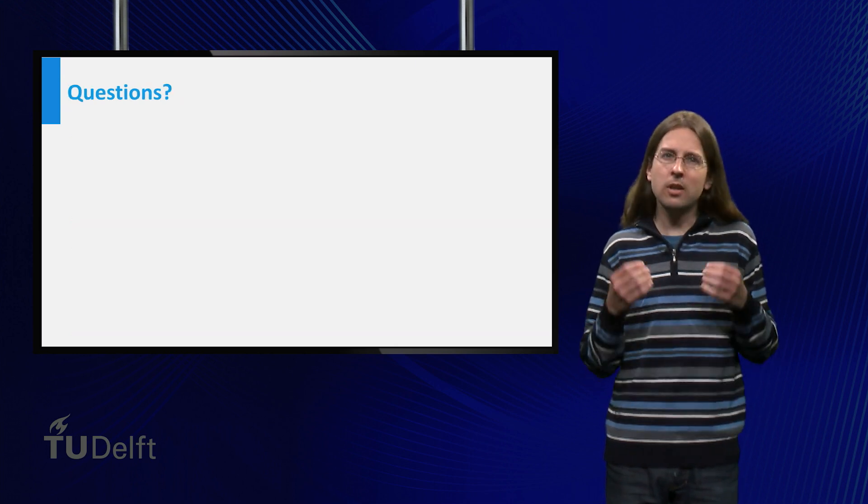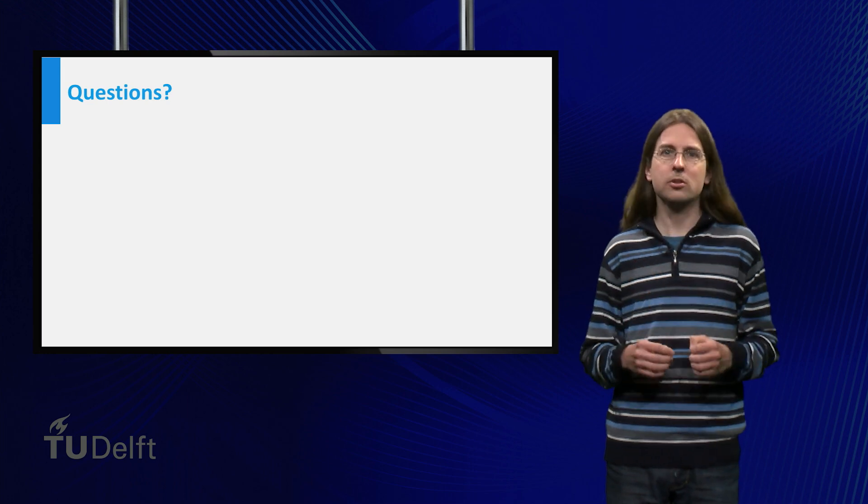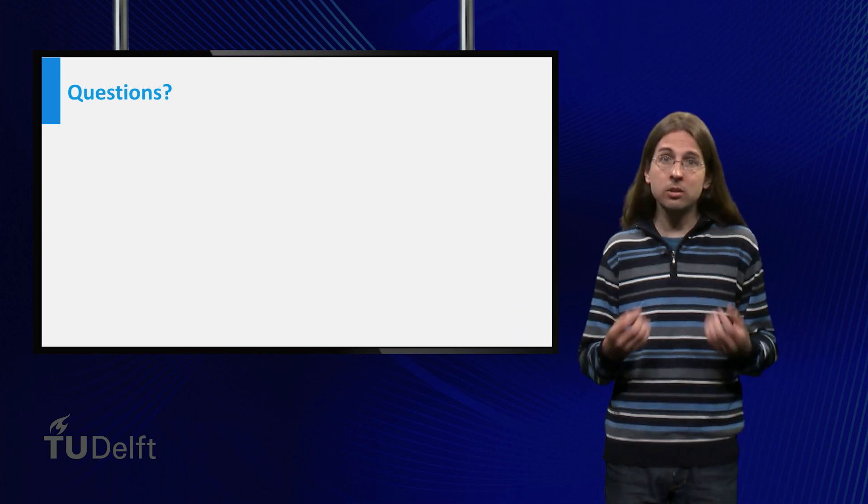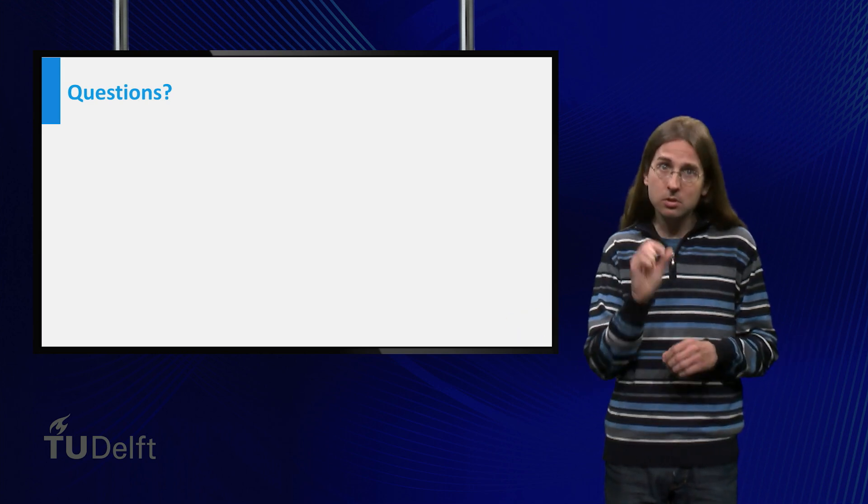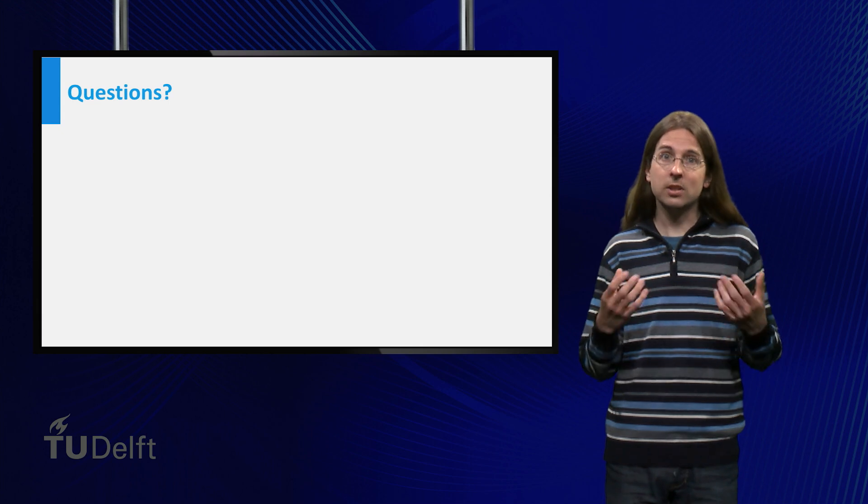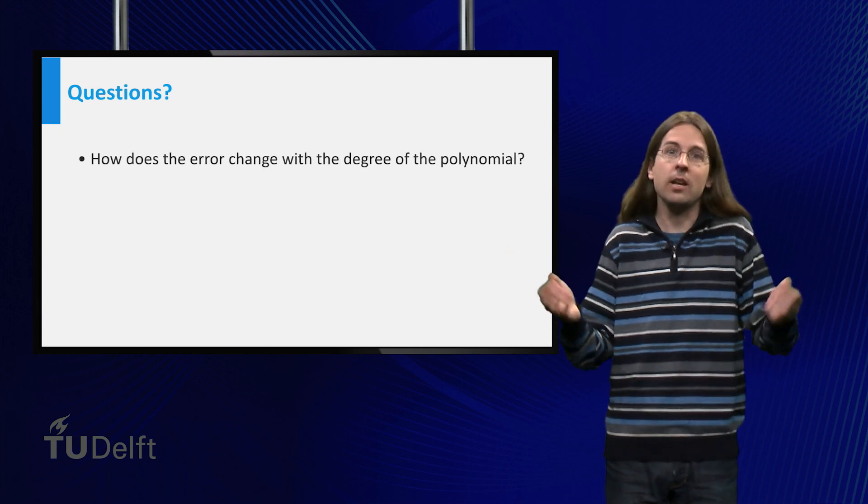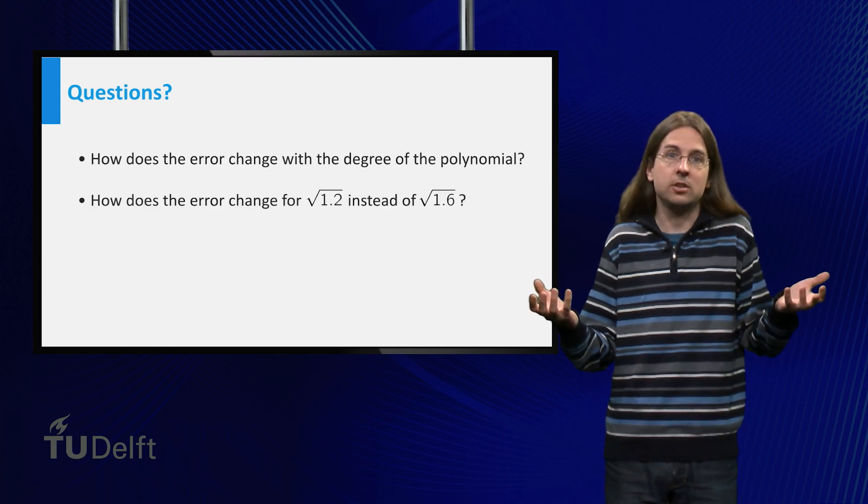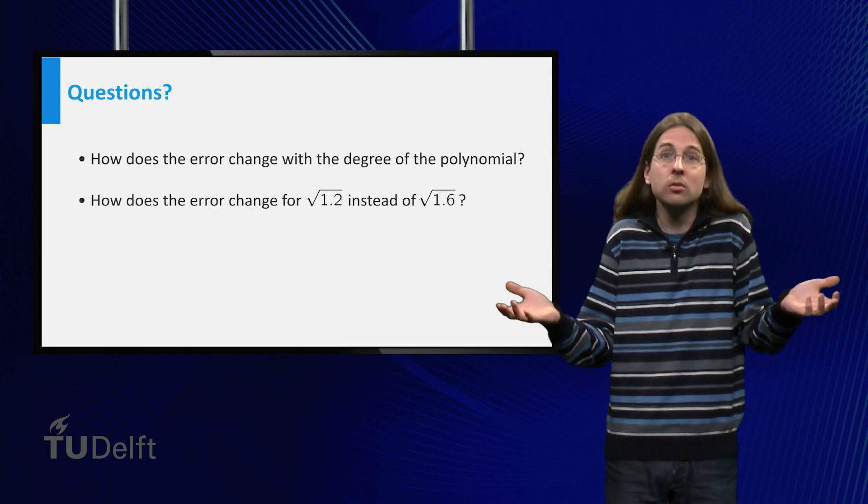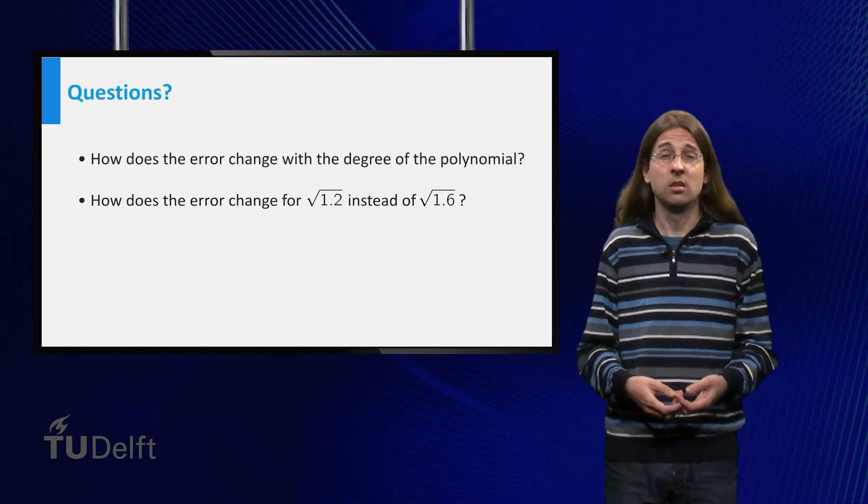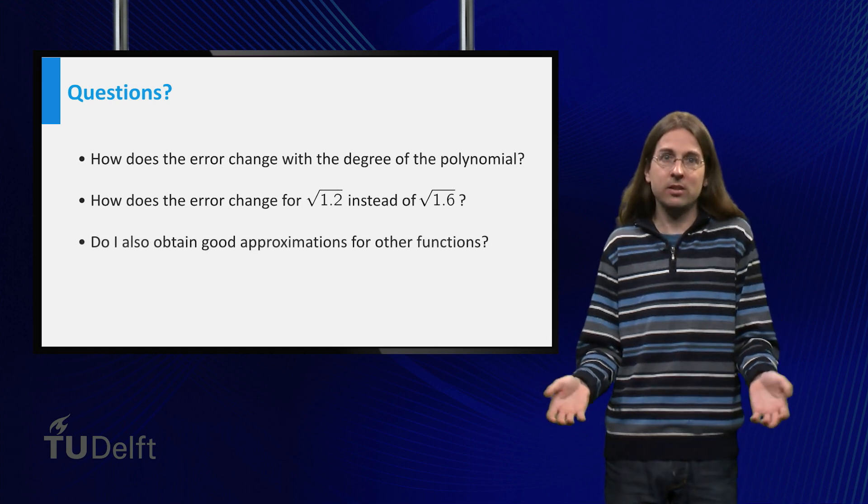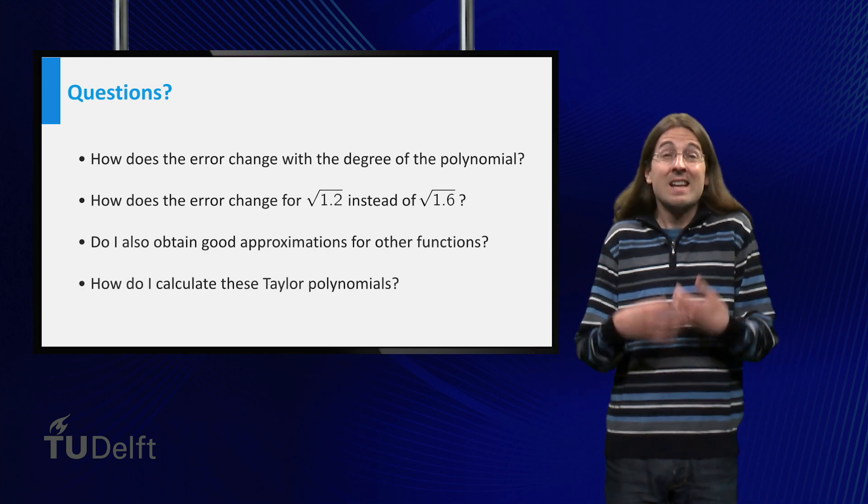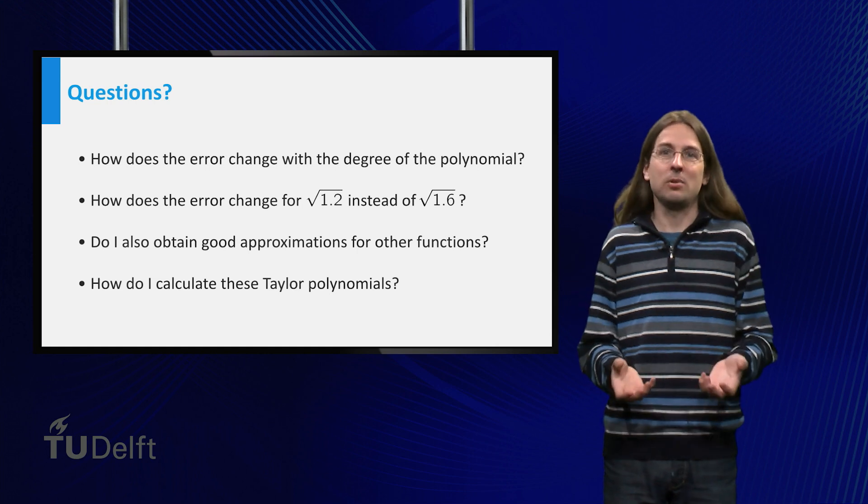One question you should ask yourself whenever you approximated anything is how big the error is. An approximation is only useful if the error is small. So you can ask yourself questions like, How does the error change if I change the degree of the polynomial? How does the error change if I calculate square root of 1.2 instead? Do I also get good approximations for different functions? And of course the fundamental questions, How do I even calculate these Taylor polynomials? At university you can explore these questions and others.